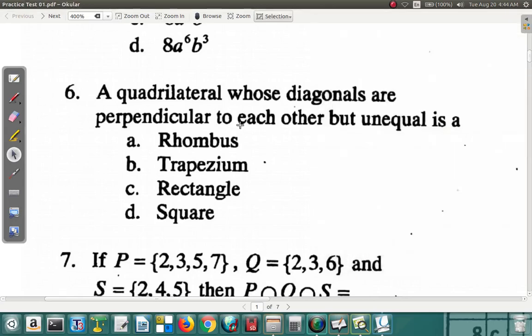Let's continue looking at practice test 1. Question 6 says, a quadrilateral whose diagonals are perpendicular to each other but unequal is a... What did you get for this?